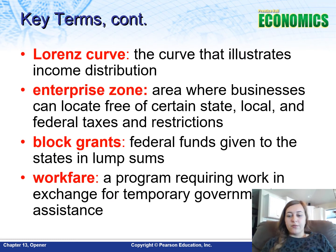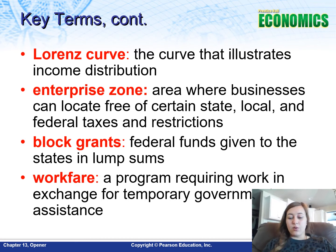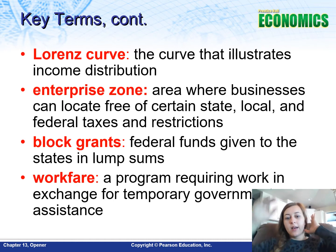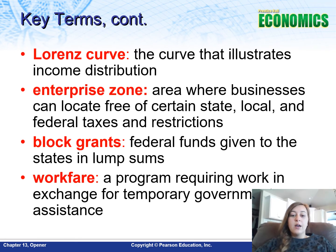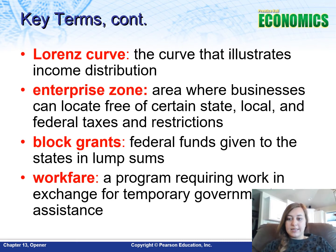The Lorenz curve is a curve that illustrates income distribution in the United States. Enterprise zones are areas where businesses can locate free of certain state, local, and federal taxes and restrictions — often put in place to help combat poverty and help low-income neighborhoods. Block grants are federal funds given to states. Workfare is a program that requires work in exchange for temporary government assistance.